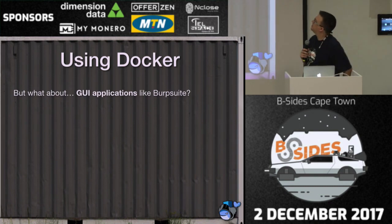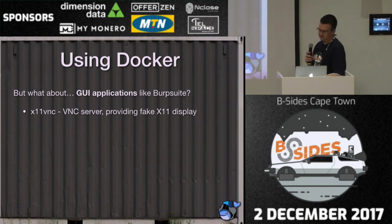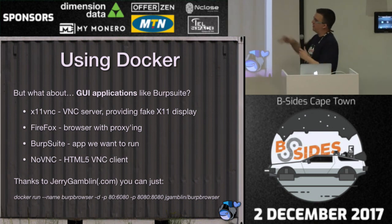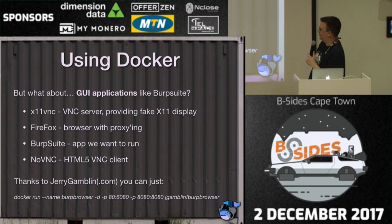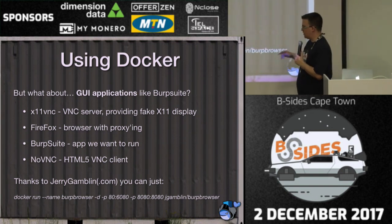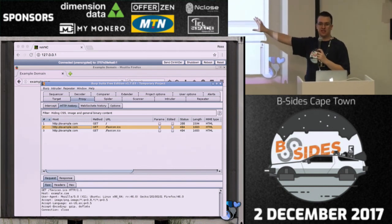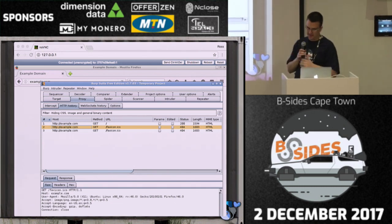What about GUI applications? Something like Burp Suite — what if we want to intercept traffic with Docker? We can use X11VNC, which is a VNC server providing a fake X11 display. We could use Firefox for browsing and set a proxy such as Burp Suite. There's something cool called noVNC, which is an HTML5 VNC client. You can bundle this all together to create a container that listens on a web port, providing a web VNC that connects to a VNC server running Firefox and Burp Suite. Connect to localhost on port 80 — you see a window manager and Linux environment with Firefox in the background and Burp Suite in front. This is all happening inside Docker with no evidence on my host machine, and I haven't had to install Burp Suite or Java.